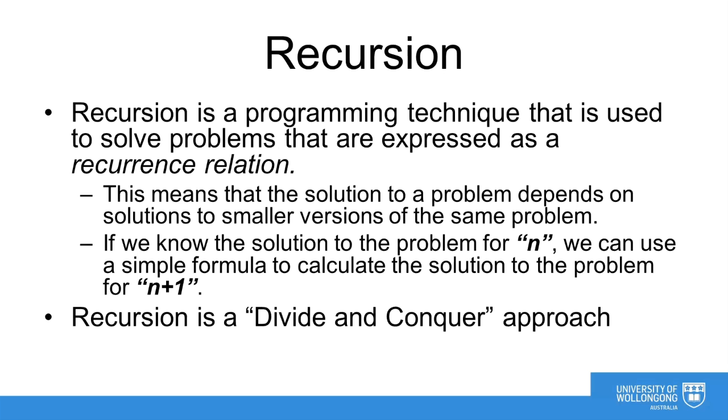For example, if we know the solution to the problem for n, then with a simple formula we can calculate the solution to the problem for n+1. Thinking about that in reverse, that means that in order to solve the problem for n, we need to know the solution to n-1. This is a kind of divide and conquer approach.